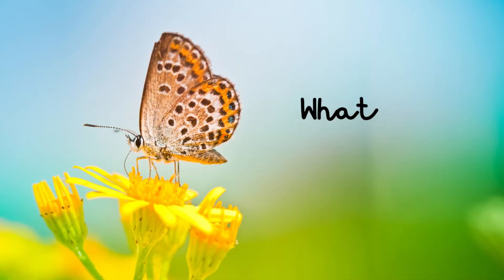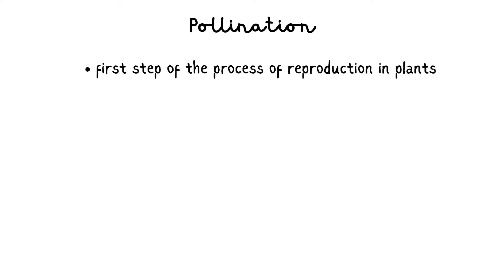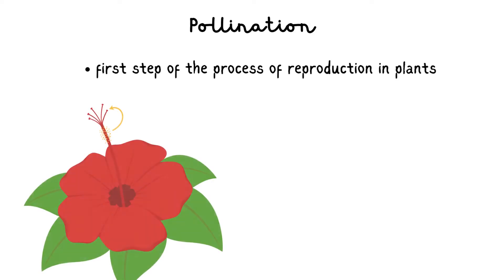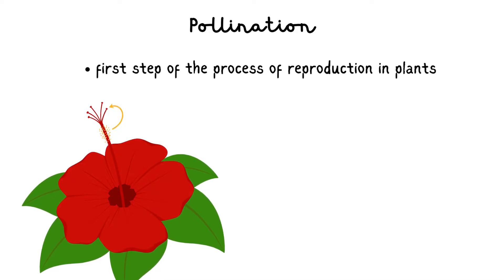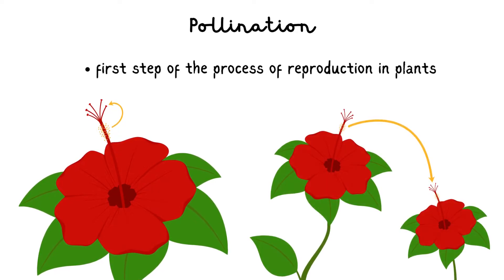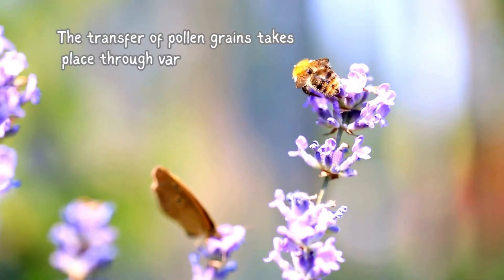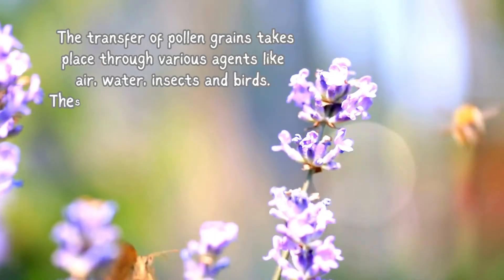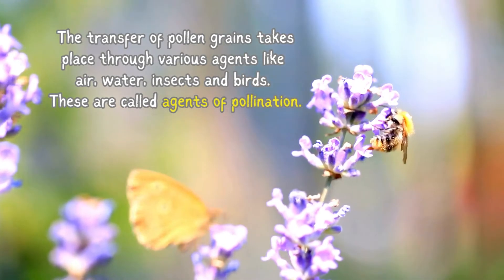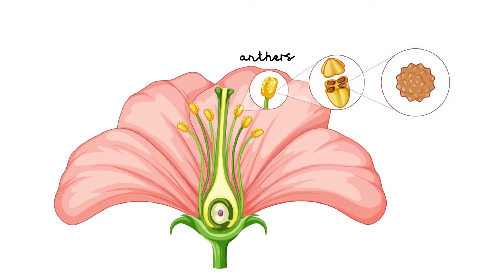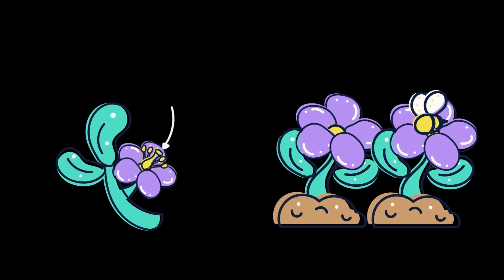Now, let's learn what is pollination. Pollination is the first step of the process of reproduction in plants. During pollination, transfer of pollen grains from the anther of a flower to the stigma of the same or another flower takes place. The transfer of pollen grains takes place through various agents like air, water, insects, and birds. These are called agents of pollination. When the anthers mature, they split open and the pollen grains are exposed. The pollen grains may fall on the stigma of the same flower, or they may be carried to other flowers by the agents of pollination.